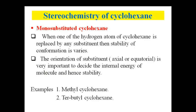Now let's see mono-substituted cyclohexane. In cyclohexane, if any one hydrogen is replaced by a substituent, it becomes a mono-substituted cyclohexane. That substituent decides the stability of the conformation — whether it is present at the axial position or equatorial position. Internal energy depends on that position. Let's see two examples: methyl cyclohexane and tertiary butyl cyclohexane.